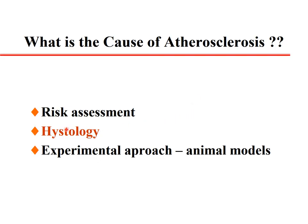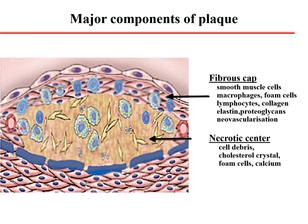We can learn about the development of atherosclerosis by knowing what's inside the plaque. Looking at the histology of the plaque: there is a necrotic center containing cell debris, cholesterol crystals, foam cells such as macrophages loaded with cholesterol, and calcification. On the surface, the fibrous cap contains smooth muscle cells, macrophages, foam cells, lymphocytes, collagen, elastin, proteoglycans, and neovascularization — showing the characteristic features of a chronic inflammatory process.